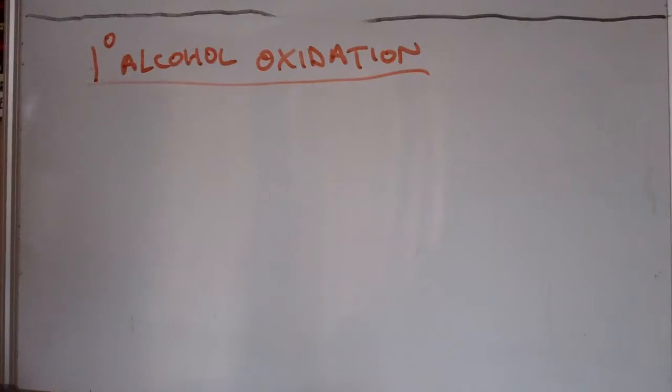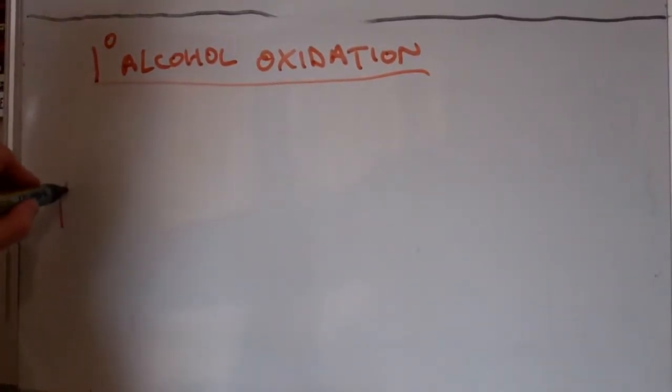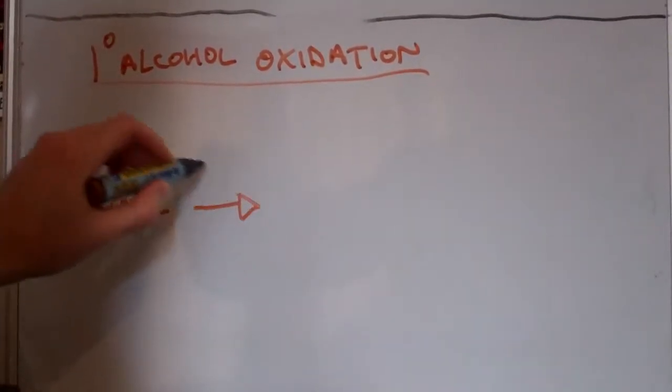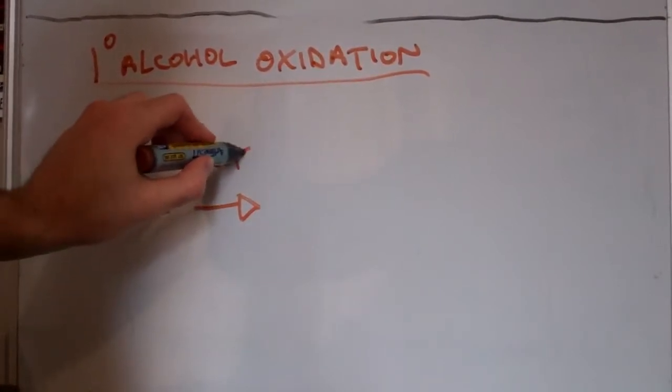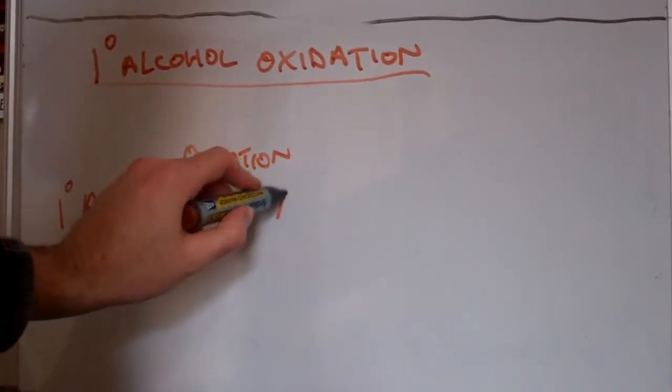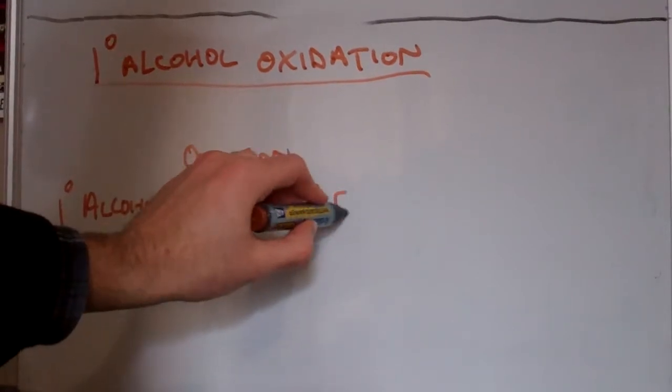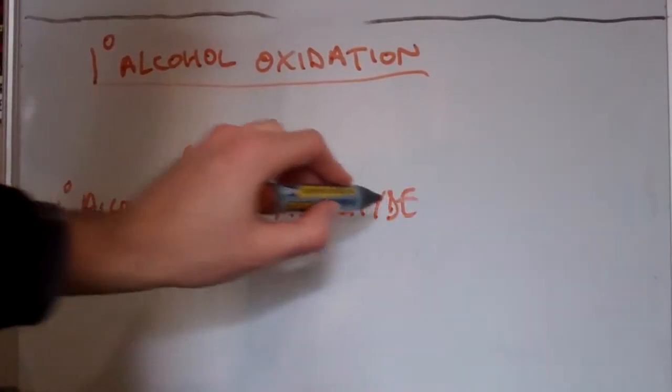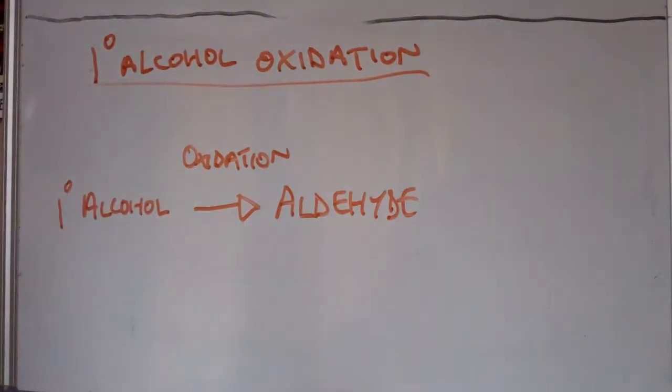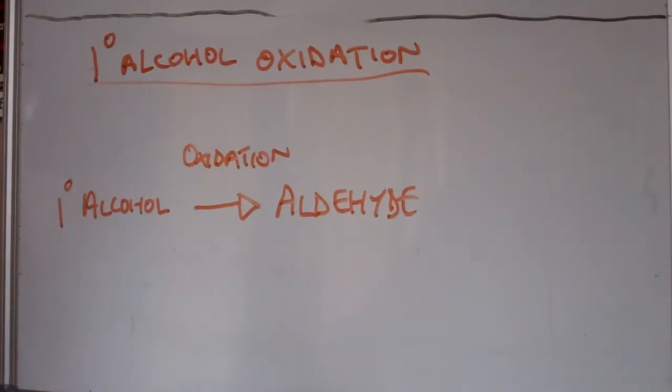The hydroxyl group on an alcohol can be oxidized. When a primary alcohol is oxidized, it becomes an aldehyde - the same aldehyde as the alcohol, so they're going to be named the same.